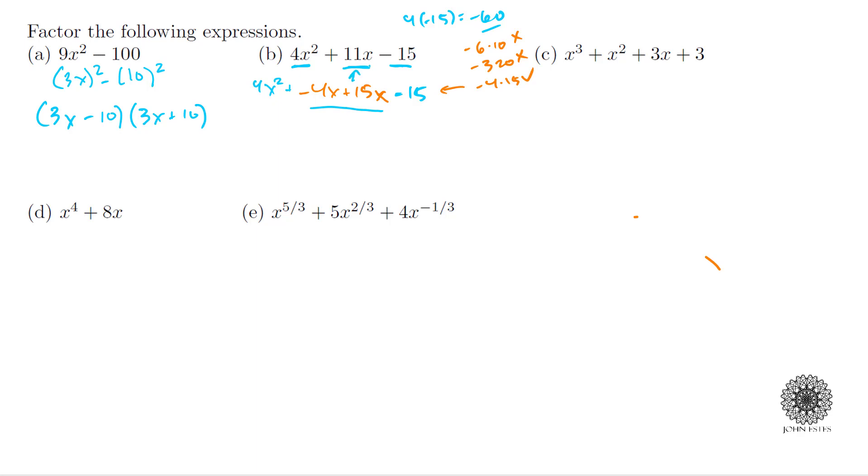If I add these middle two terms I get the 11x again, so I didn't really change anything. But what this will allow me to do is factor by grouping. I'm going to put my first two terms in a group and my last two terms in a group. Out of the first two I can factor out a common factor. I can take out a 4x and when I do that I'm left with (x - 1).